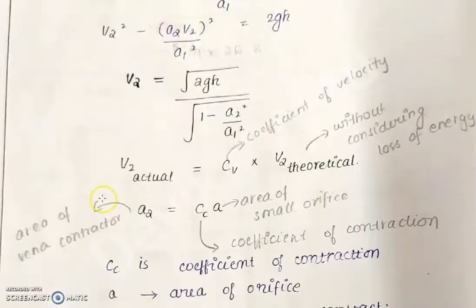To find a2, we refer it to the orifice area 'a', which is the only dimension measurable from the device. Using the coefficient of contraction Cc, we get a2 = Cc × a. For a particular device, the manufacturer provides the value of Cc, so a2 can be determined.